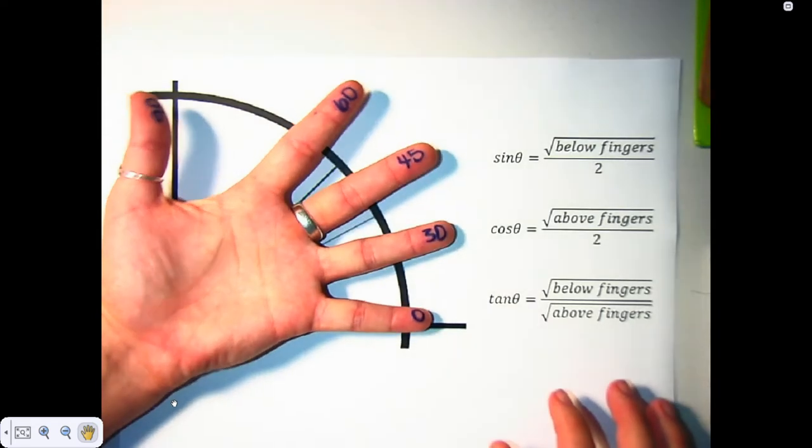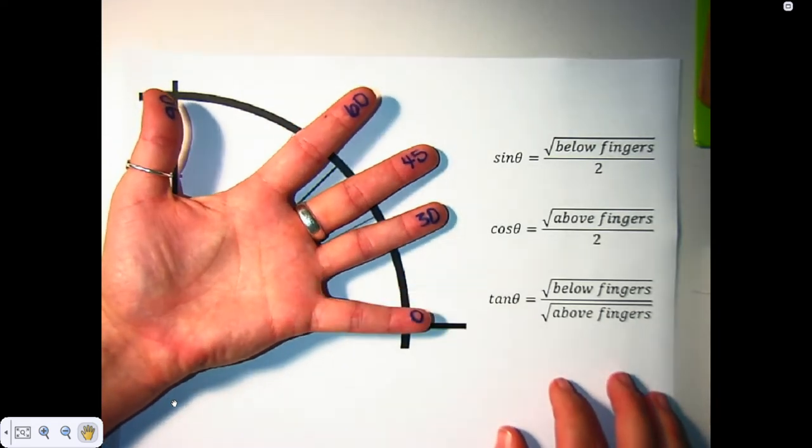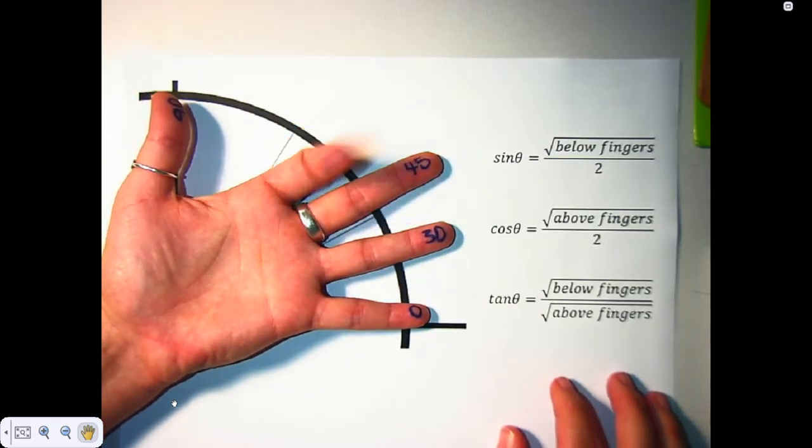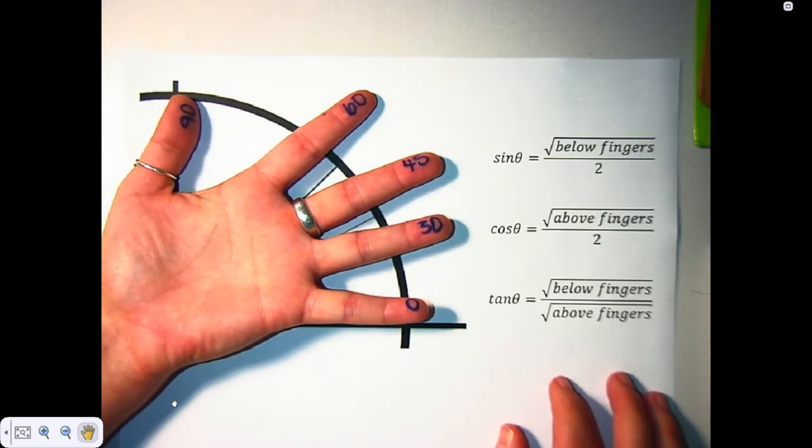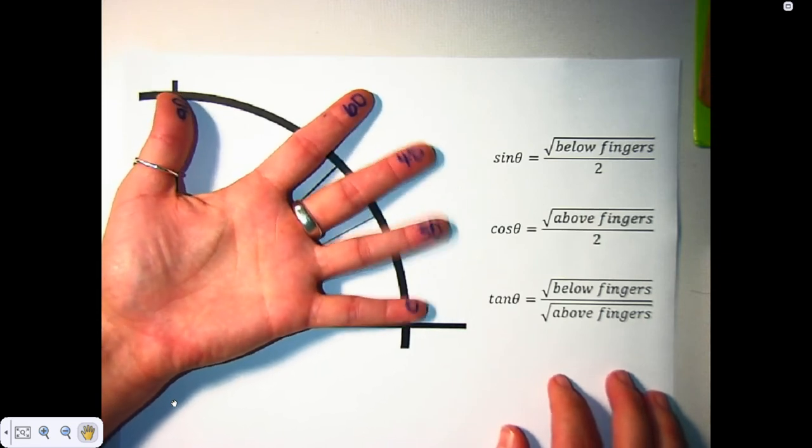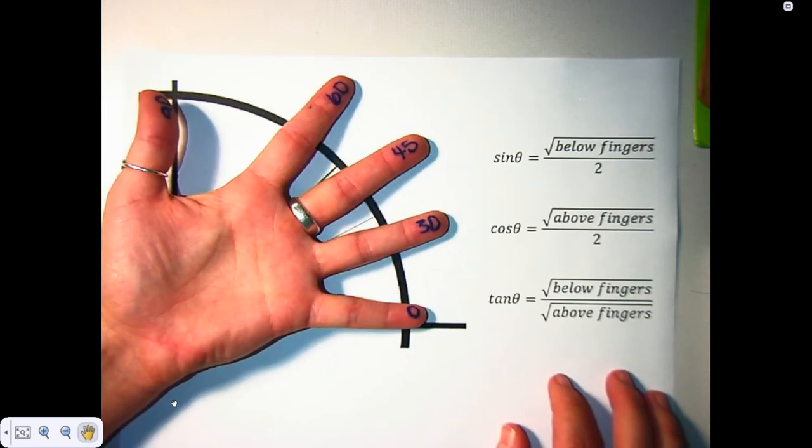So let's say that your hand represents the first quadrant. You have 0 degrees, 30 degrees, 45 degrees, 60 degrees, and then 90 degrees, which you can't really see. And you can use each of these fingers to talk about the different trig functions.